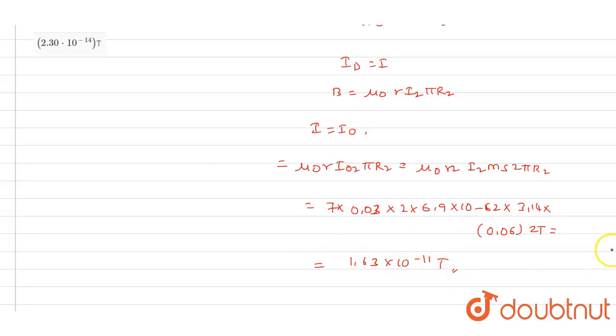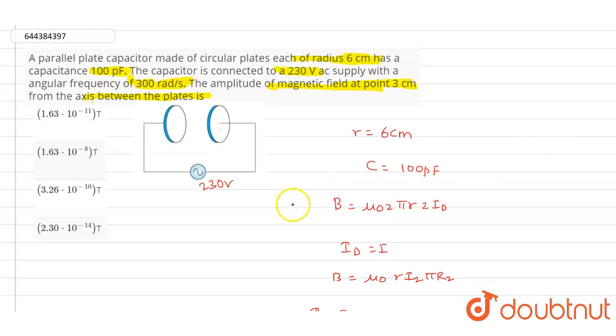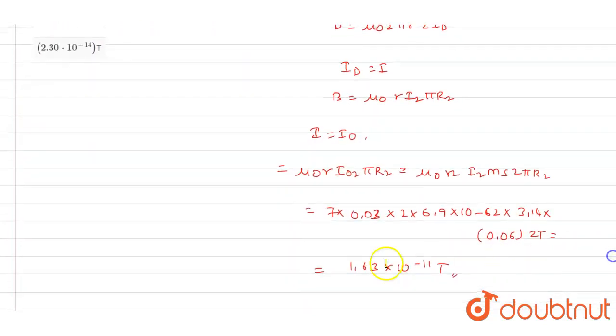So this is the value of the amplitude of the magnetic field which is 3 centimeters away from the axis of the two plates. Out of the four options, if you see option A, we have 1.63 times 10^-11 Tesla.